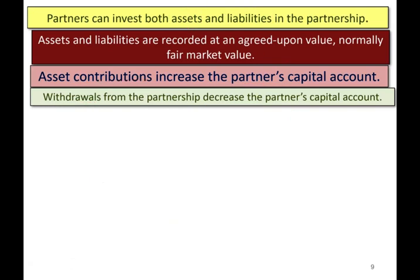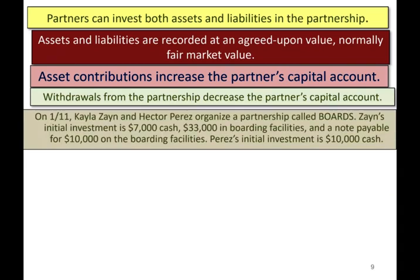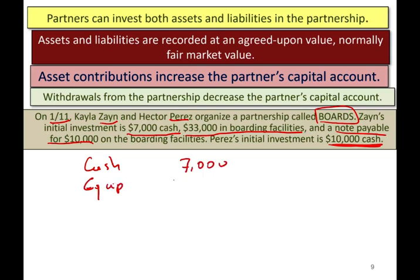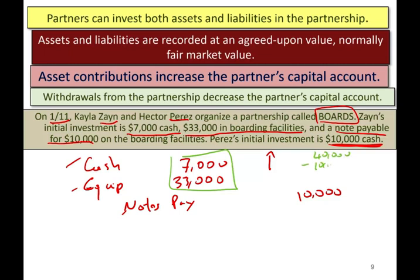Let's look at an example of an initial contribution. On January 11th, Zane and Hector Perez organize a partnership called Boards. Zane's initial investment is $7,000 cash, $33,000 in boarding facilities, and a note payable — there's a loan against those boarding facilities. Perez only contributed $10,000 cash. So Zane contributed cash of $7,000, equipment of $33,000, and a notes payable of $10,000. Their capital account reflects $40,000 in total assets minus $10,000 in liabilities.